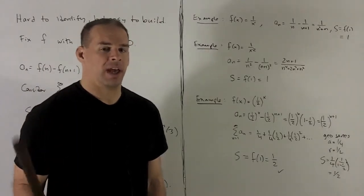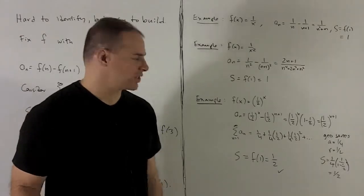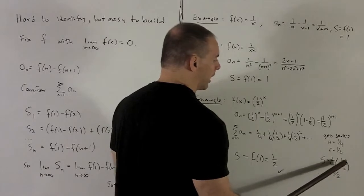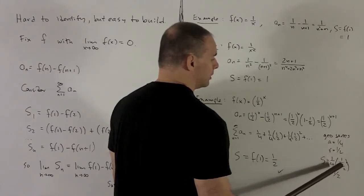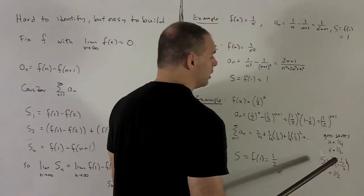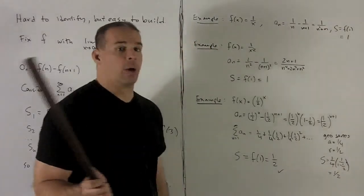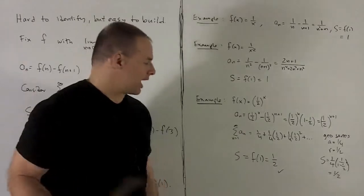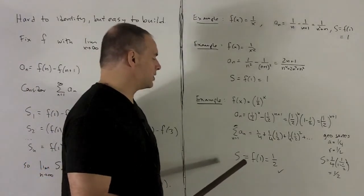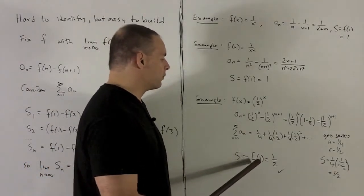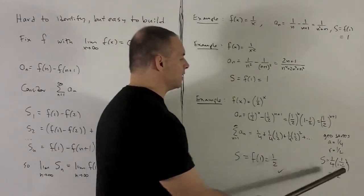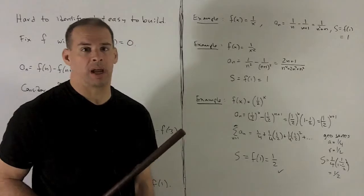So since the absolute value of r is less than 1, we know this converges, and we have a formula for the sum. So it's going to be a times 1 over 1 minus r. So a quarter, take 1 minus a half and flip it over. So our sum is going to be equal to a half. Now, by our rule for the telescoping series, we're also going to have that s, our sum, is equal to f of 1. But f of 1 is just going to be equal to a half also. So this agrees with what we would get from the geometric series.